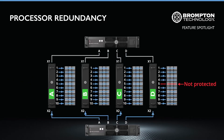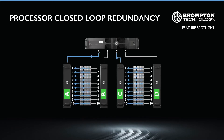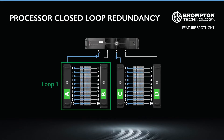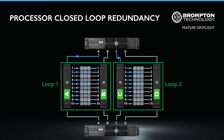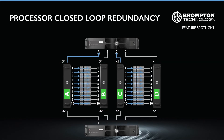Using processor redundancy alone, however, does not protect against potential failures of any XD unit strings. To avoid this, the SX40 processor can run both processor and closed loop redundancies at the same time. This involves creating the redundancy loops between the XD distribution units of trunks A and B, and C and D, while ensuring that the two SX40 processors used for redundancy are connected to the same X1 and X2 ports on the respective Tessera XD distribution units.